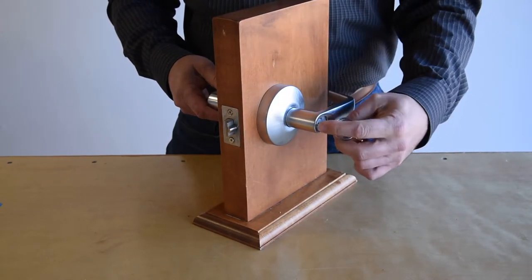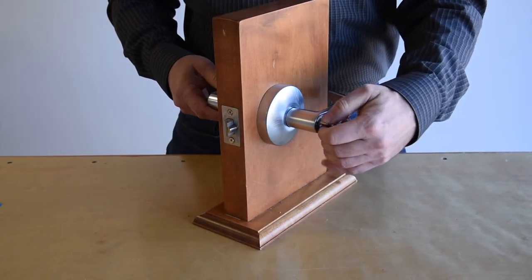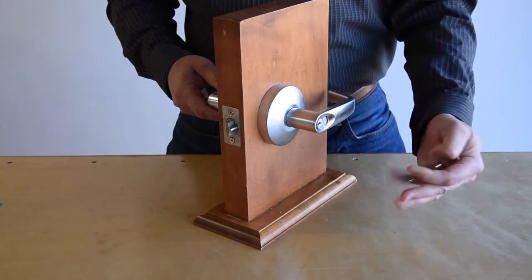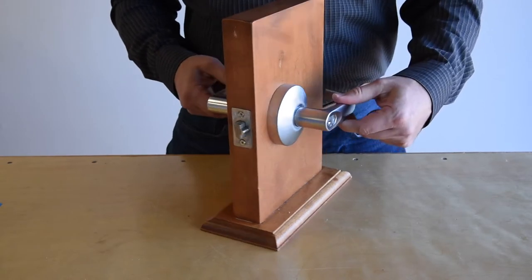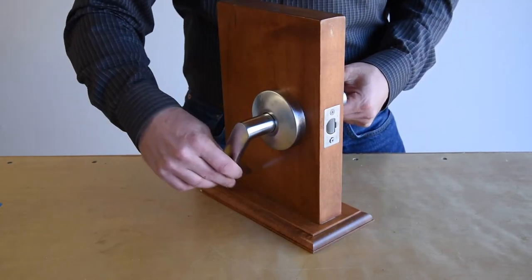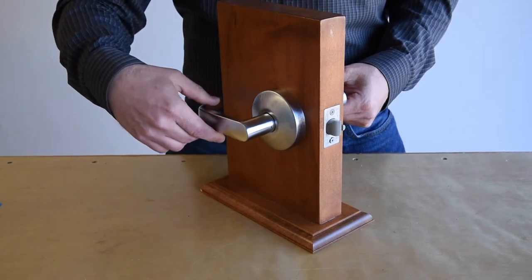Simply insert the key, rotate it 360 degrees, remove the key, and now the exterior handle is locked. However, you will always maintain free egress from the interior.